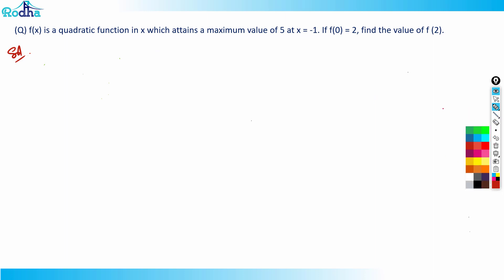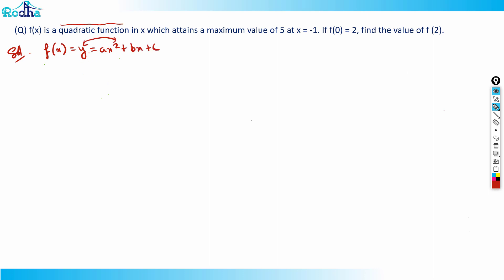Let's try to understand this. Any quadratic function is written as f(x) = y = ax² + bx + c, because the graph will be drawn in the xy-axis. We should also know that when 'a' is positive the graph opens upward, and when 'a' is negative the graph opens downward.